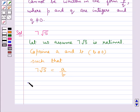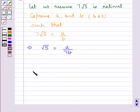Now this gives us root 5 is equal to a upon 7b. Now we know that 7, a, and b are integers, and a upon 7b is rational.